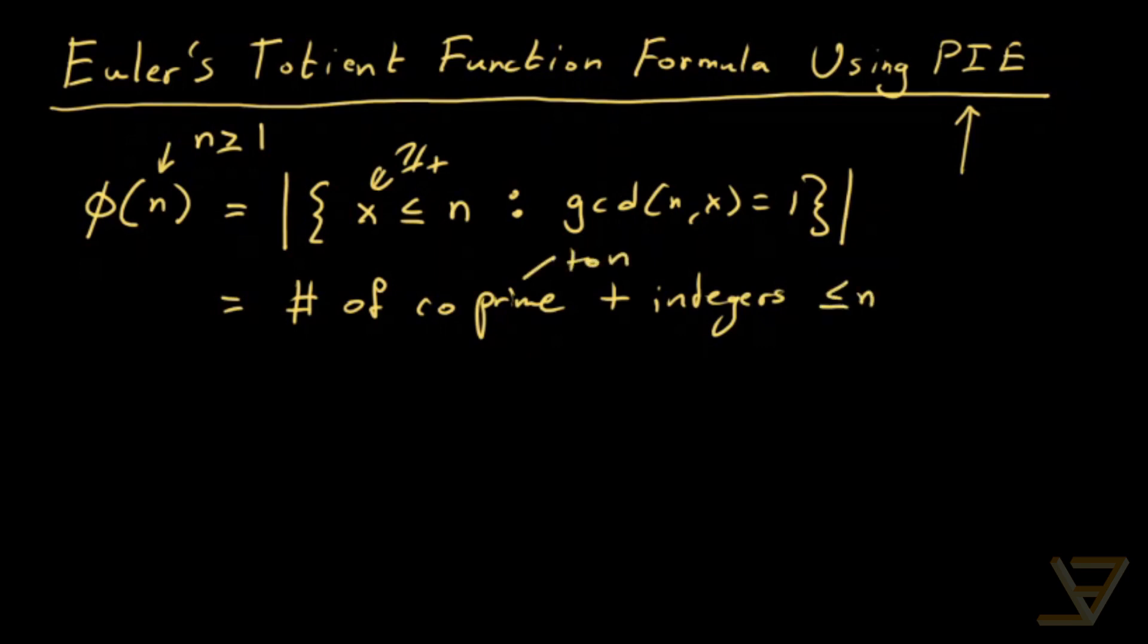And we want to count this very important function. So what we're going to do is express phi of n in terms of the prime factorization of n. Let's say n is equal to p1 to the e1 times p2 to the e2 all the way through to pm to the em, where p1, p2 through pm are distinct primes and the eis are the multiplicities of the distinct primes.